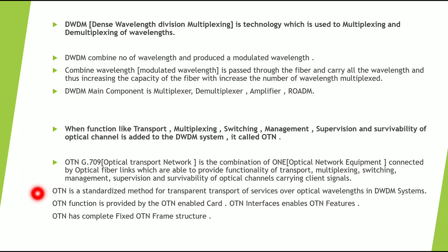OTN is a standardized method for transparent transport of services or optical wavelengths in a DWDM system. Transparent means there is no modification of the client signal as it passes through the DWDM system. OTN functionality is provided by OTN-enabled cards and interfaces. When a signal arrives at the OTN-enabled interfaces, OTN features are added — mapping, overhead mapping, and encapsulation — and then the signal is passed to the DWDM system. OTN has a complete fixed OTN frame structure.